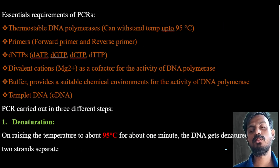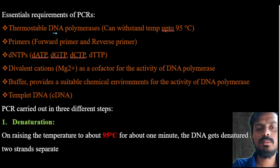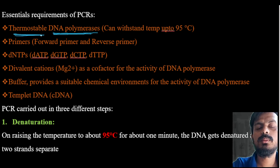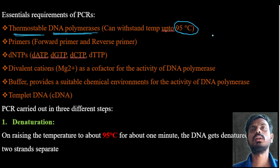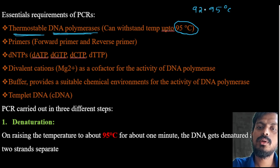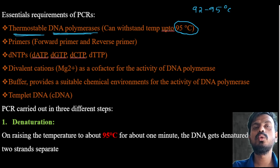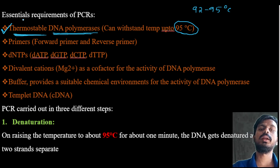What are the essential components required in PCR? First is thermostable DNA polymerase. DNA polymerase's role is the formation of nucleotide strands. Thermostable means heat-stable — it can resist heat up to 95 degrees centigrade. During denaturation, the temperature is around 92 to 95 degrees centigrade, so the DNA polymerase must withstand this temperature to function properly.